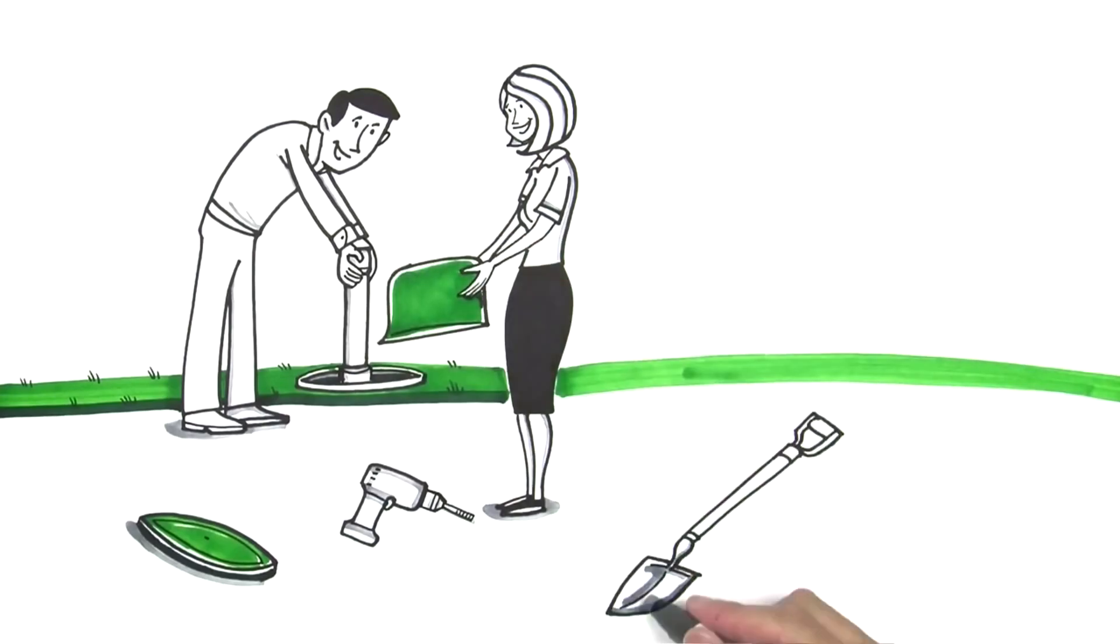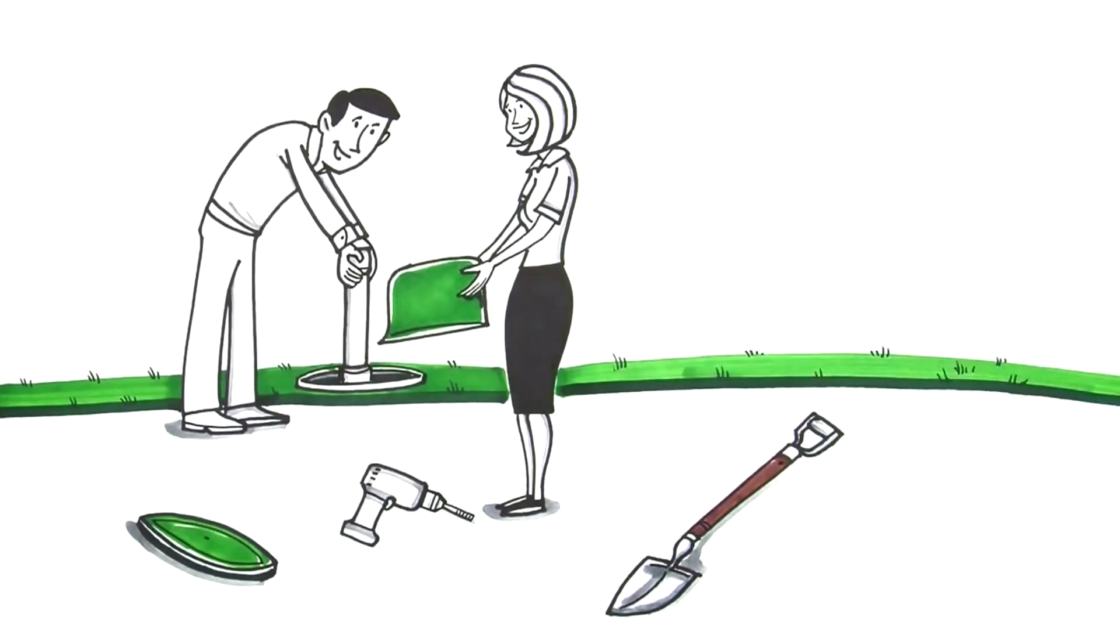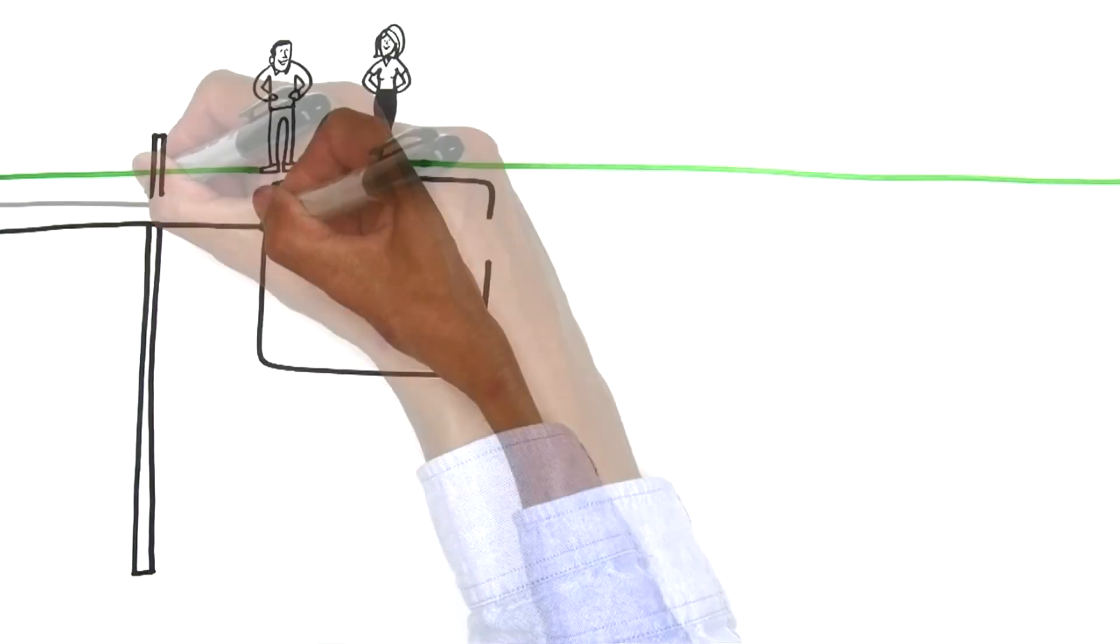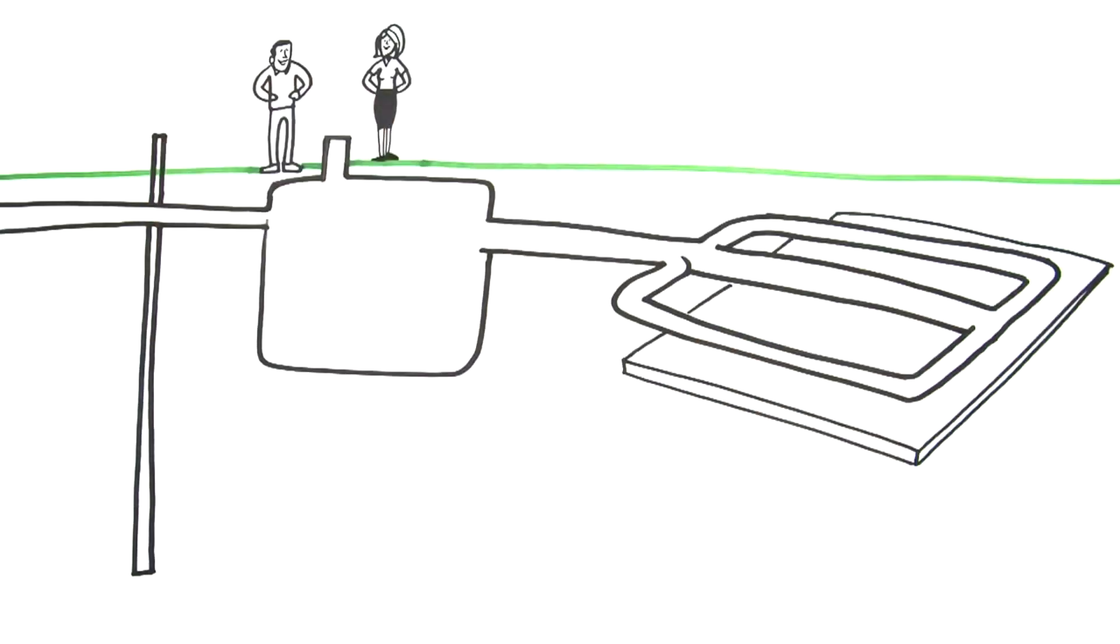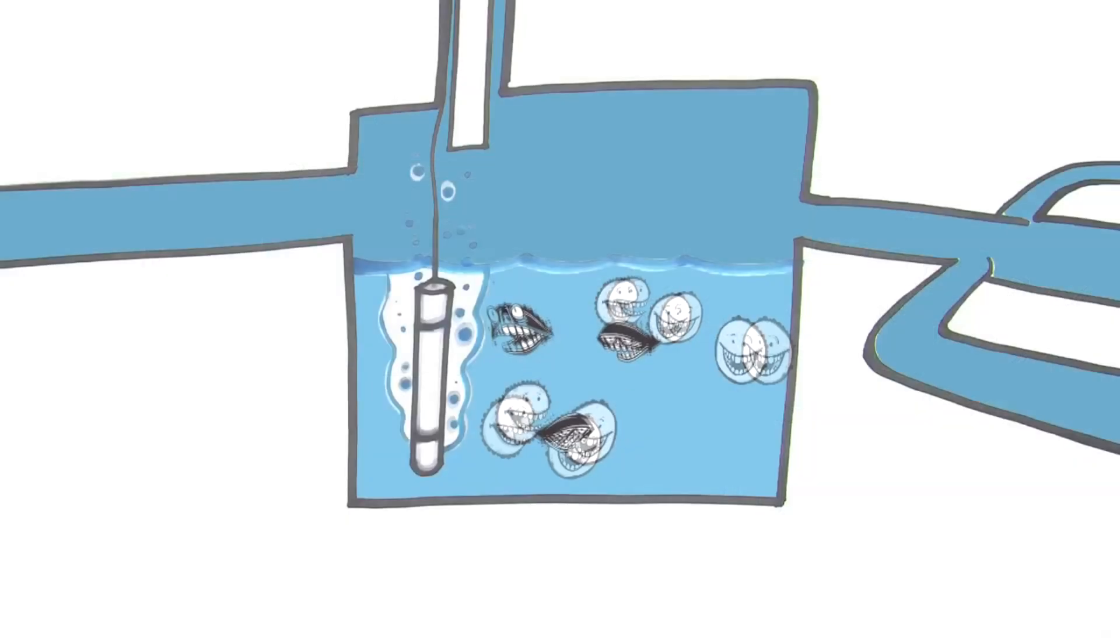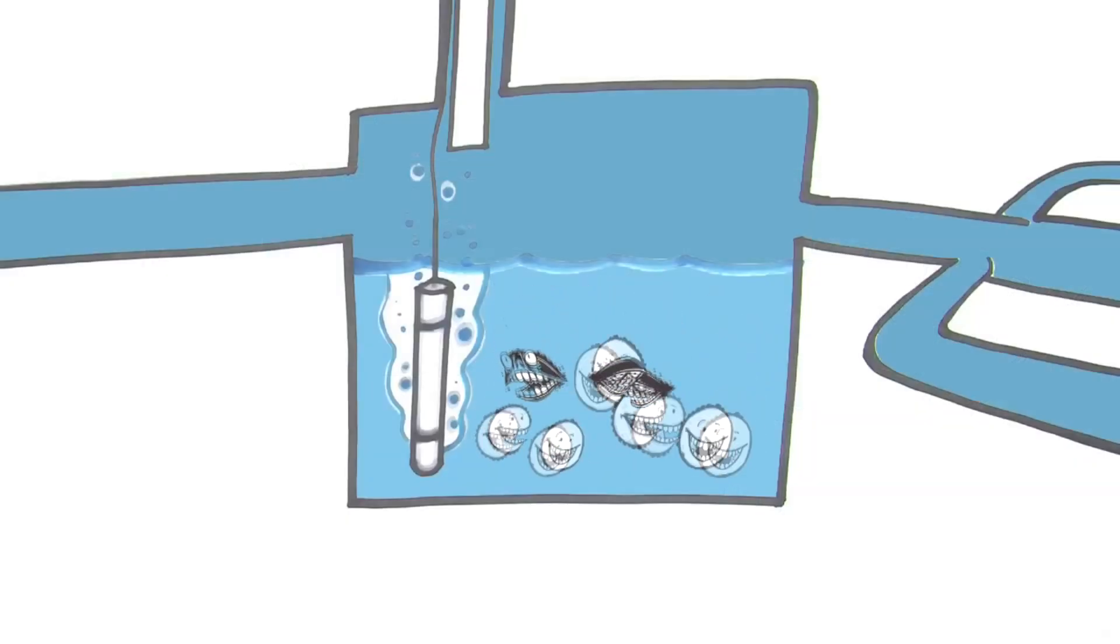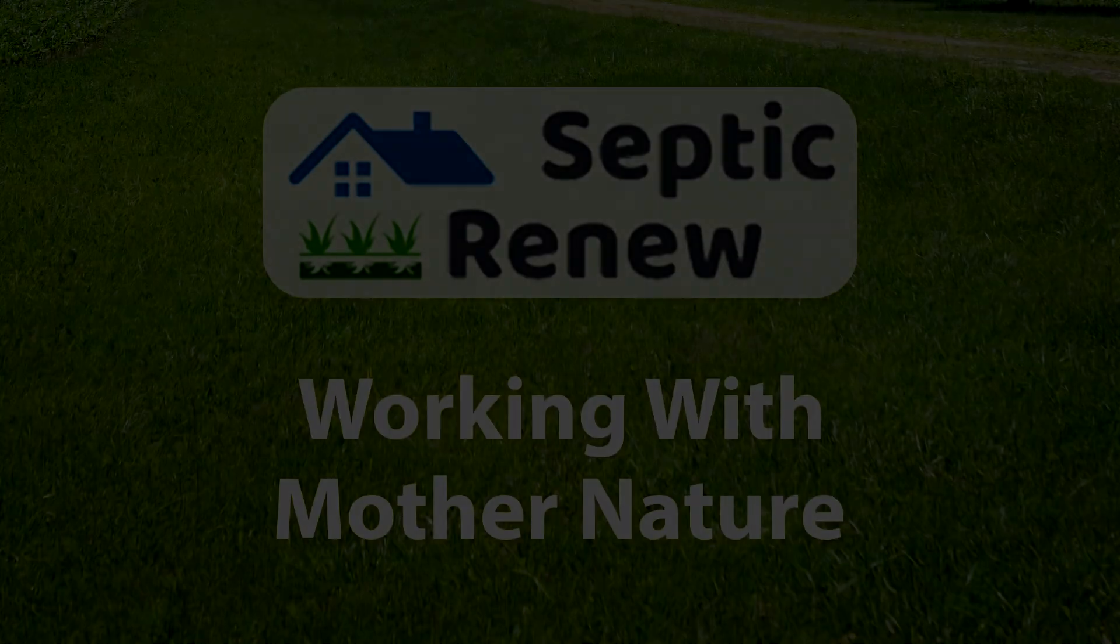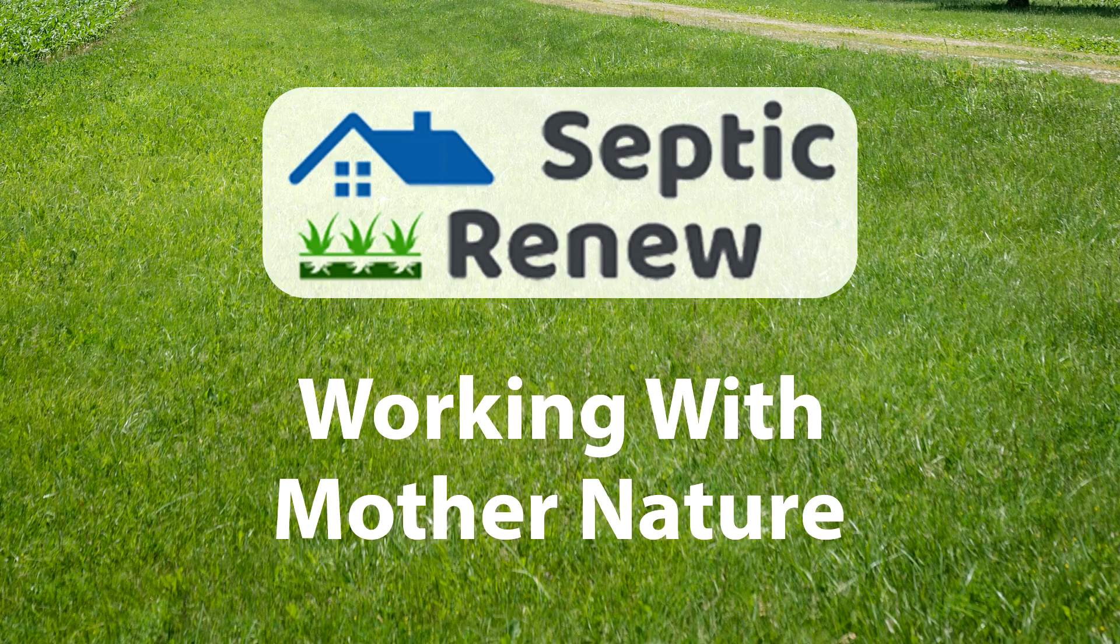By installing a remediator and introducing aerobic bacteria, your septic system springs back to life. These bacteria get to work immediately, generating more of their kind and consuming all the waste in your septic system, including the problematic biomat. In the end, your septic system is revived, you regain the comfort of your home, and save a significant amount of money in the process.